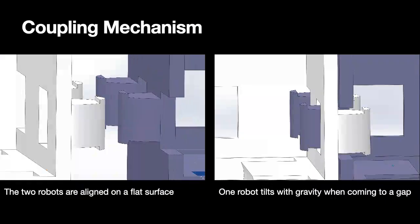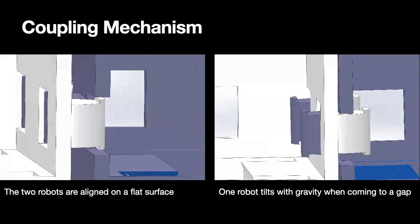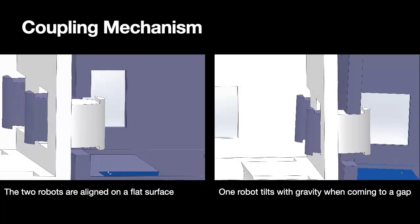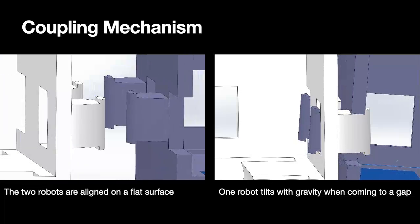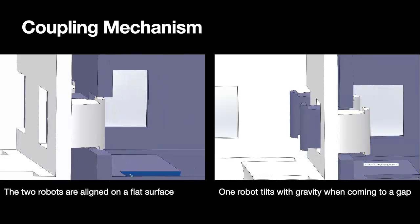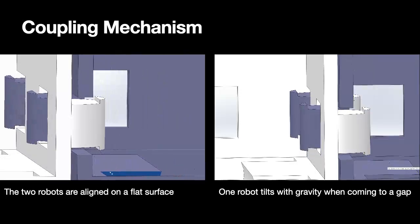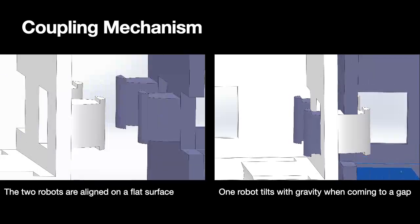Here we show the coupling mechanism of the robot. On the left video, this is showing that when two robots are aligned and on a flat surface, they will be able to freely insert the knobs into the holes of the neighboring robot without any additional force.